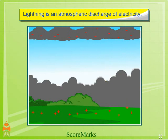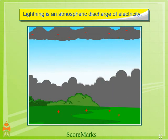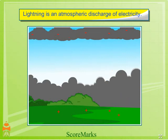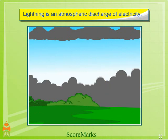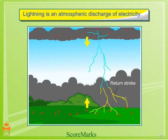Lightning causes sudden expansion of air, which causes thunder. Thunder occurs with lightning with a large sound of clouds.